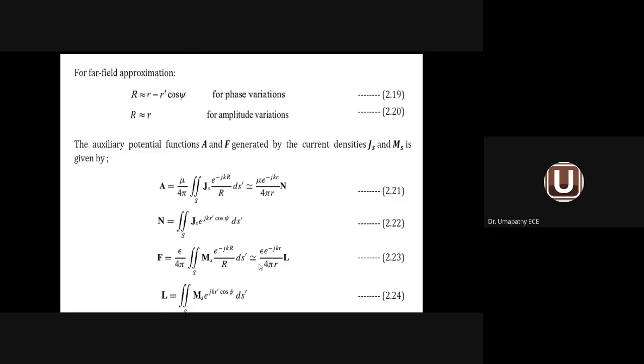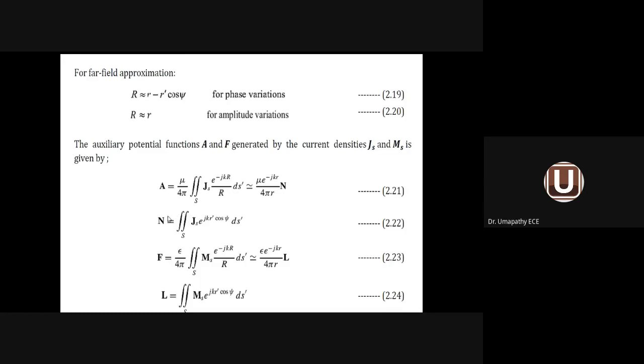Finally, substituting the values of A_θ, A_φ, F_θ, F_φ — and combining both A and F components with respect to θ and φ — I obtain expressions for E_θ and E_φ. E_R = 0 and H_R = 0. Combining L and N with respect to θ and φ also gives expressions for H_θ and H_φ. These are the final equations for analysis of the aperture antenna.